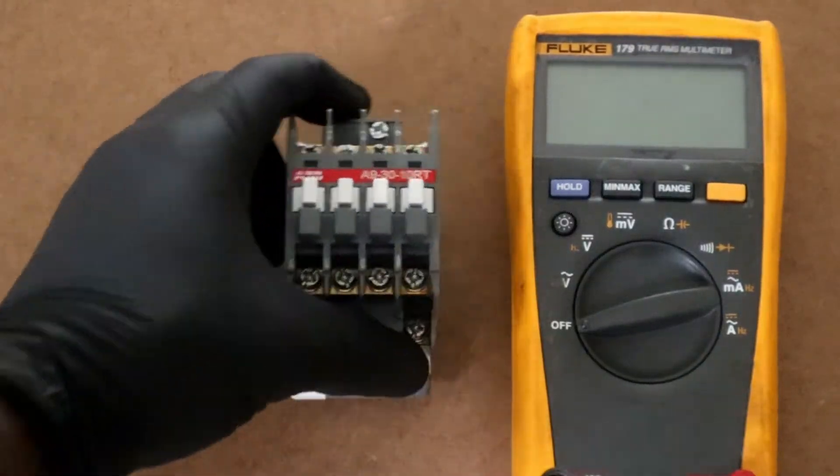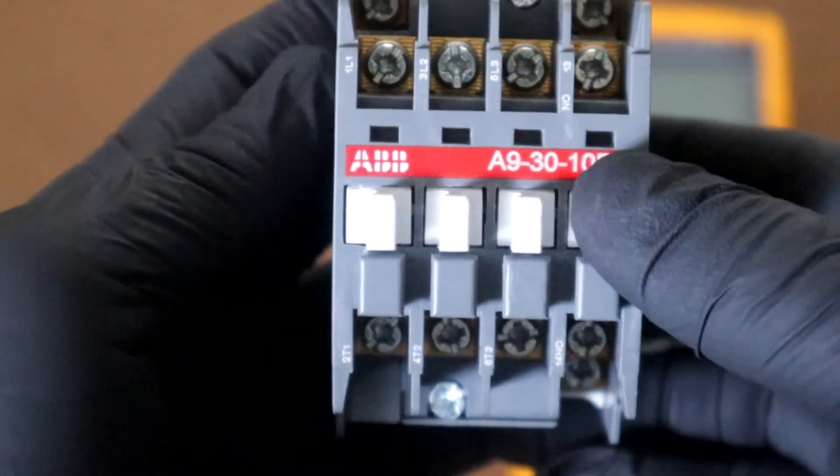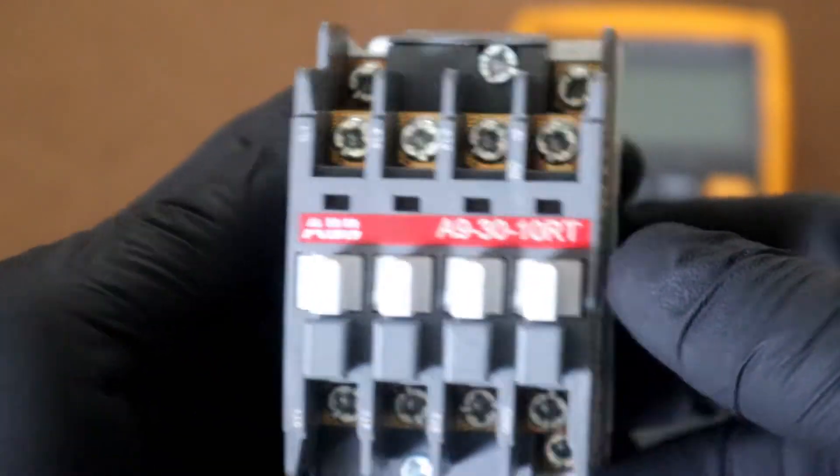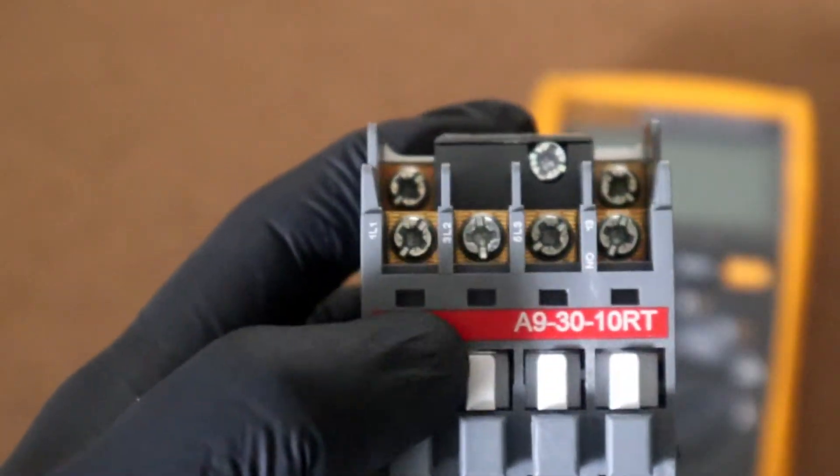Hello everyone, for today's video I'll be showing you how to test a 3-pole contactor. For today's testing I'll be using my Fluke 179 true RMS multimeter.